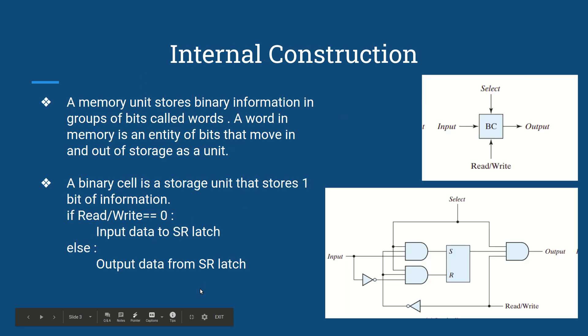This is how our binary cell in logical form looks. Here, select tells us whether we have selected this binary cell or not. If we have selected it, then only we can perform read and write operations. If read/write equals 0, that means we are writing to the binary cell. If it is 1, then we are reading from the binary cell.